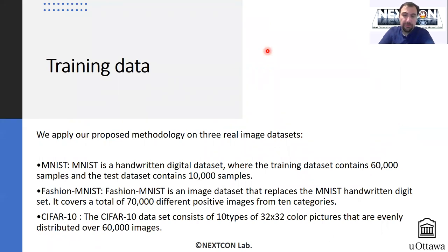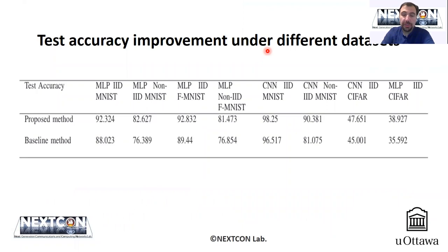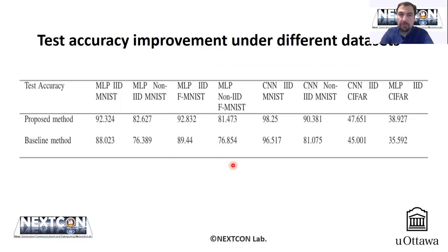We used three real image datasets to test our approach, and simulated an environment with users participating in this federated learning environment. This is a brief summary comparing the proposed model and the baseline method. As you can see, under every dataset — both independent and identically distributed as well as non-independent and identically distributed — the performance improvements of the proposed method when compared to the baseline are obvious, with significant improvements on the order of two, three, up to six percent.